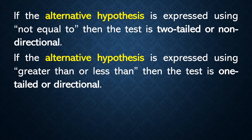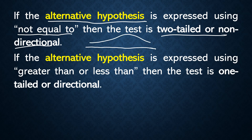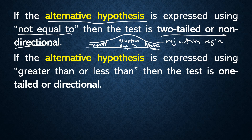Now let's discuss the two types of alternative hypothesis. If the alternative hypothesis is expressed using not equal, then that is two-tailed or non-directional. On a normal curve, there are two rejection regions — one on each tail — and an acceptance region in the middle. You determine it is two-tailed when the alternative hypothesis uses not equal.